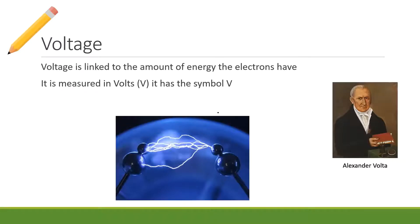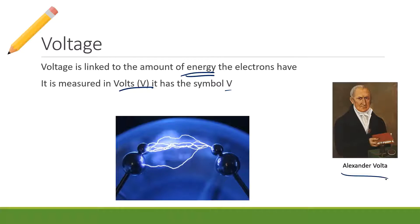Voltage is linked to the amount of energy the electrons have. It is measured in volts and has the symbol V — finally one that makes sense — compared to current which is measured in amps with the symbol I. It was popularized by Alessandro Volta, who essentially came up with the term voltage.